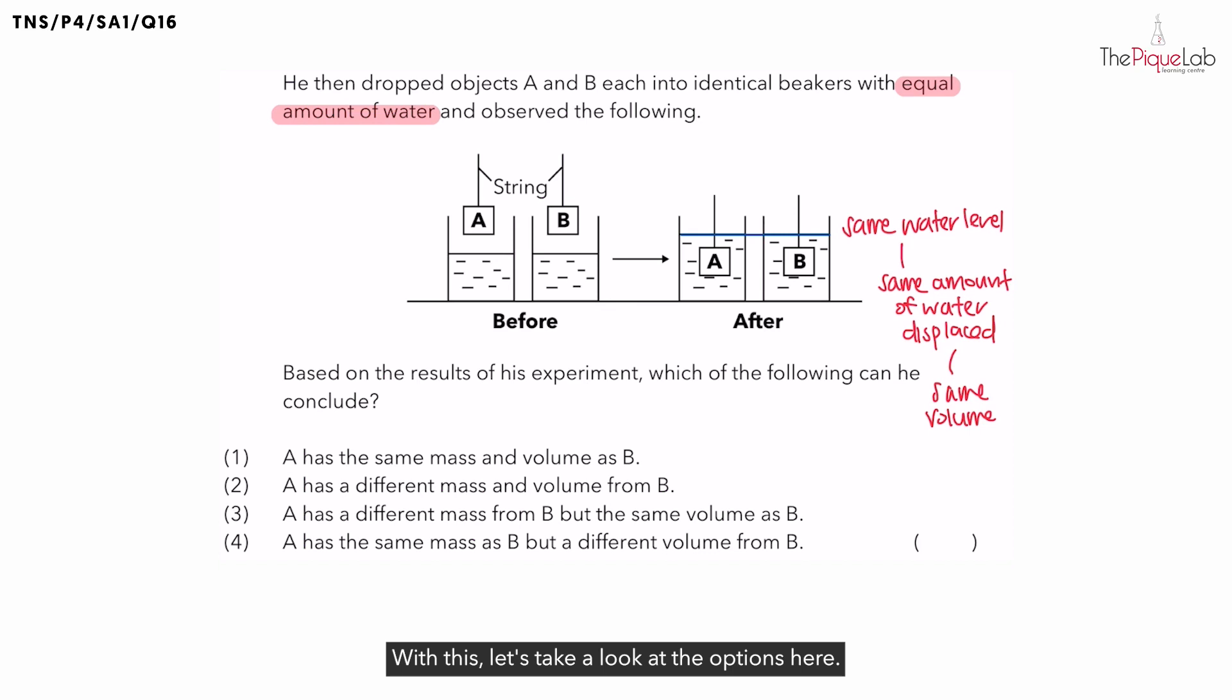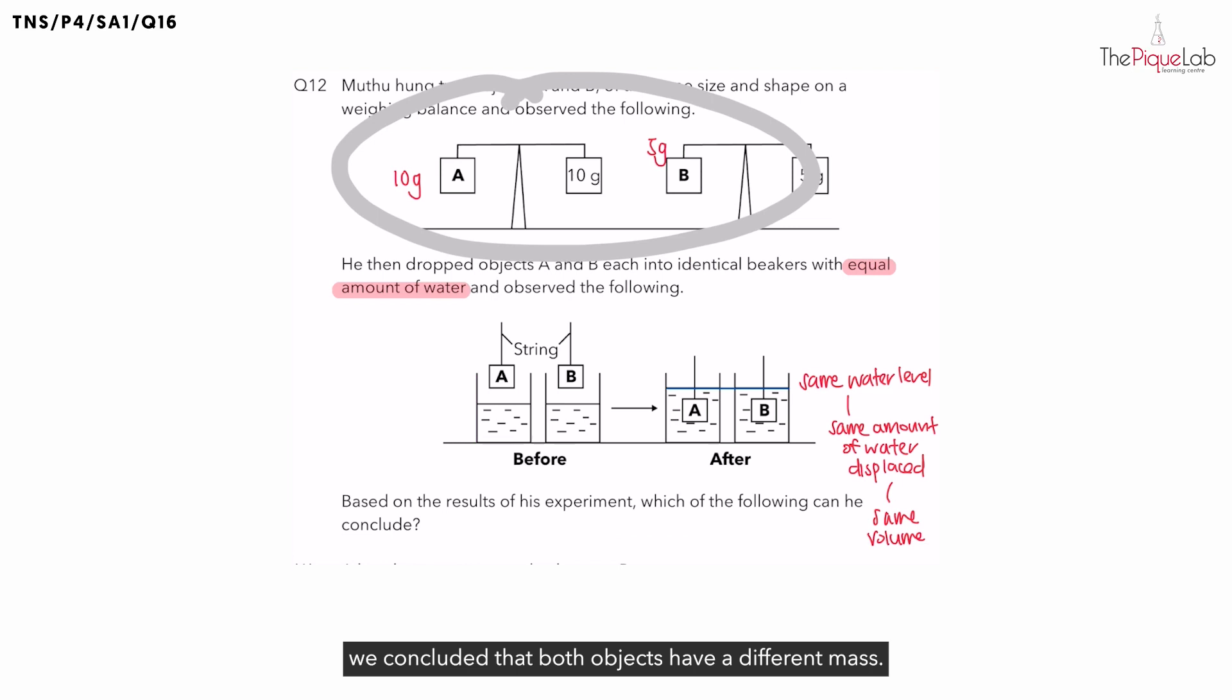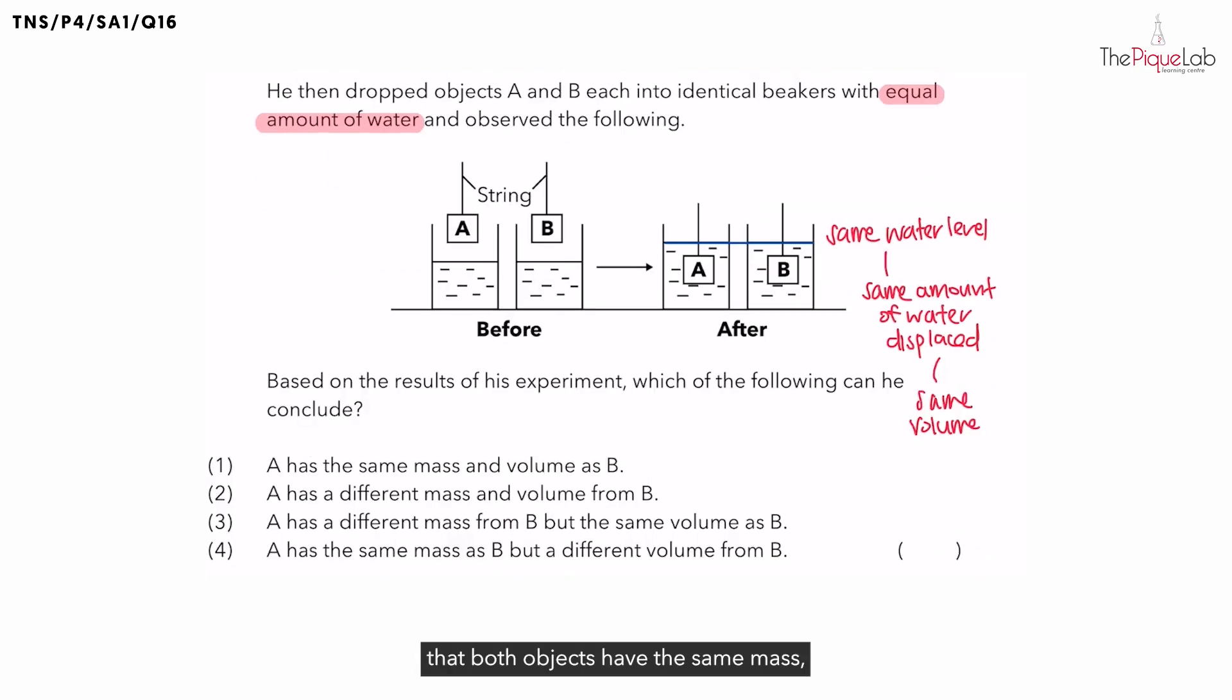With this, let's take a look at the options here. Option 1. Object A has the same mass and volume as object B. Do objects A and B have the same mass? No. From this experiment, we concluded that both objects have a different mass. Therefore, it is not true that both objects have the same mass, and option 1 is incorrect.